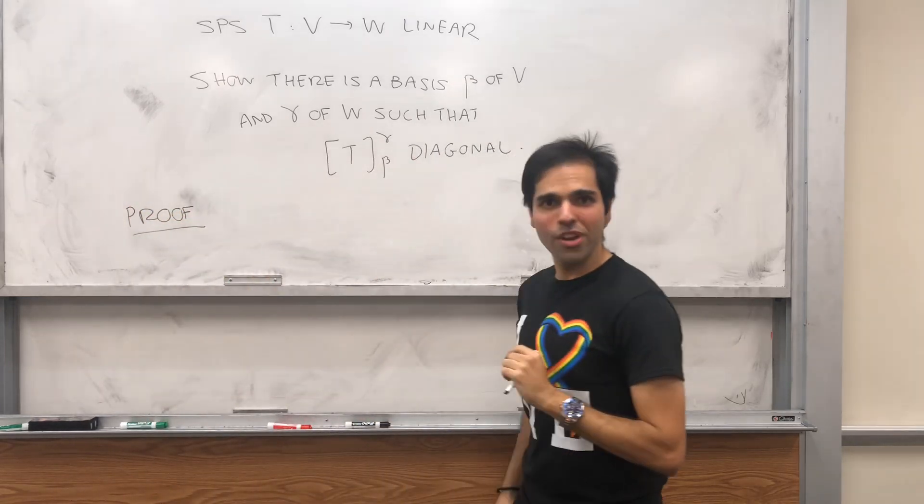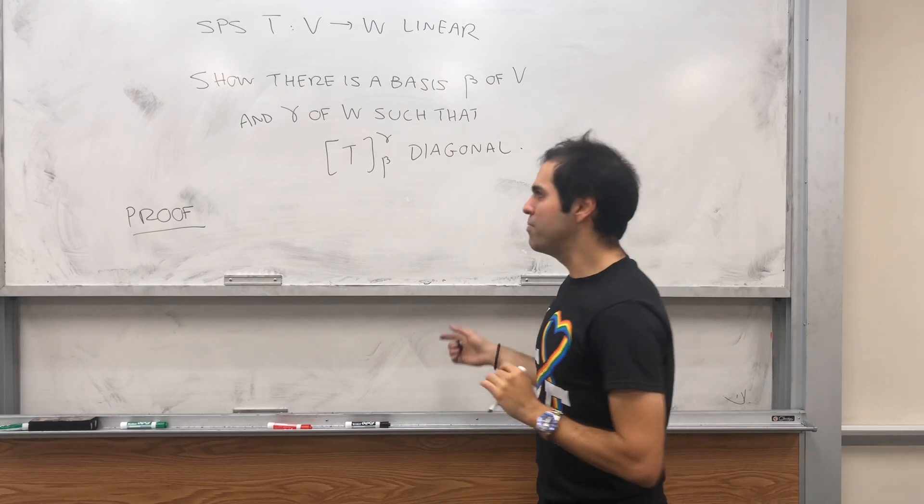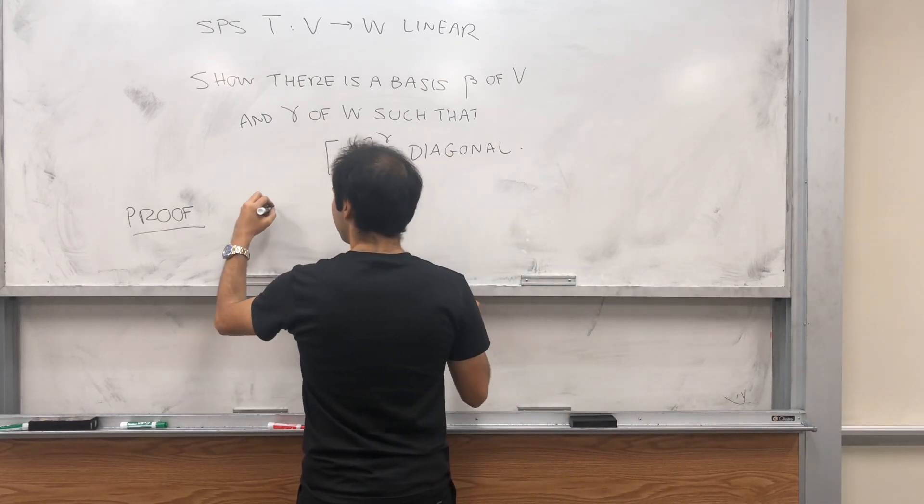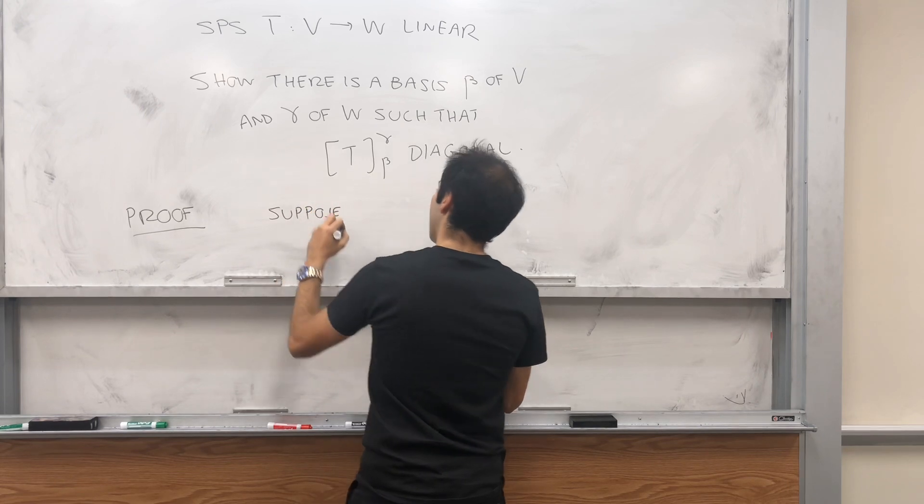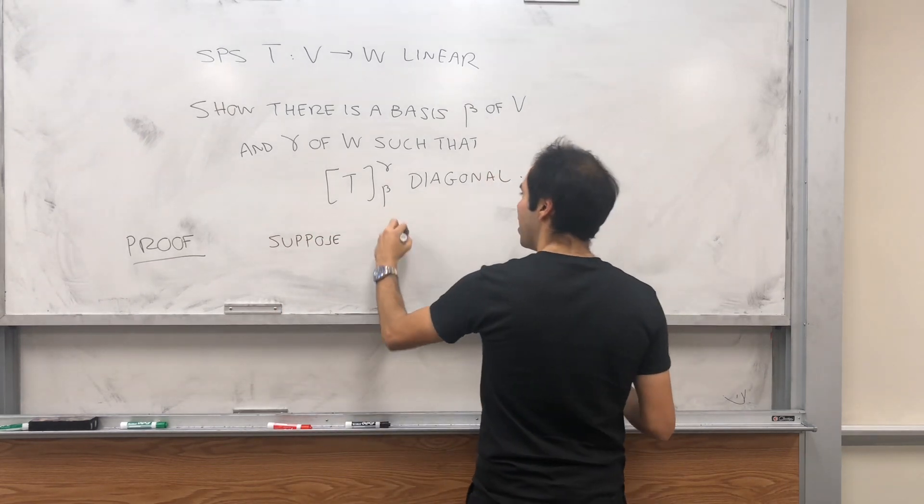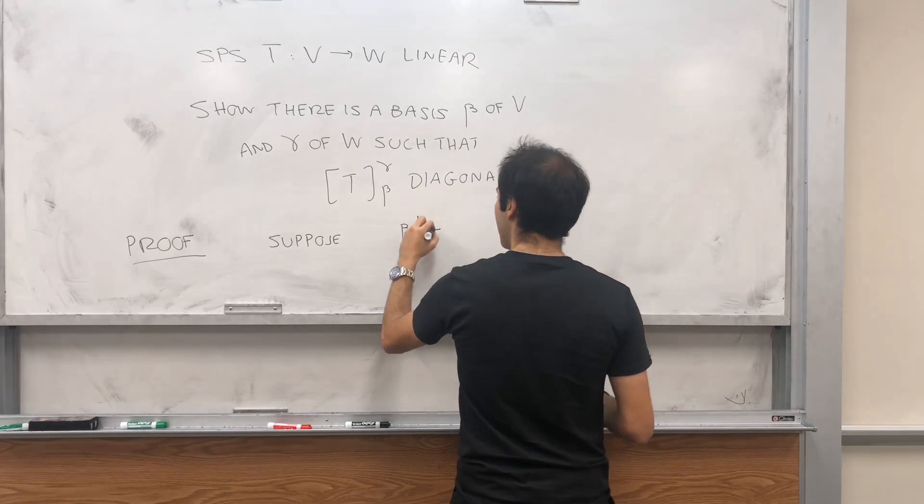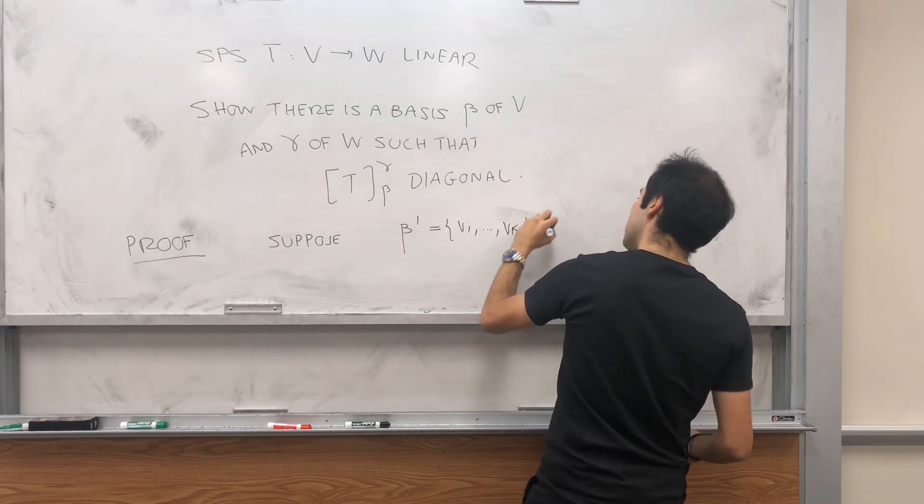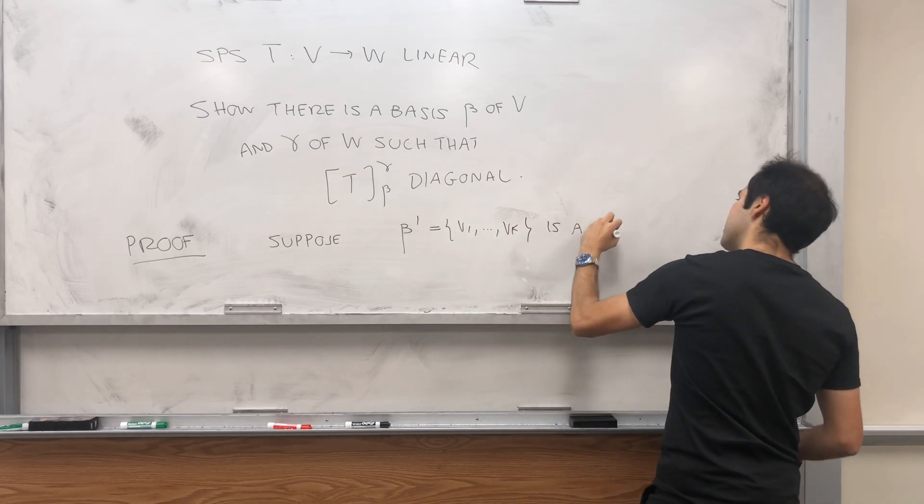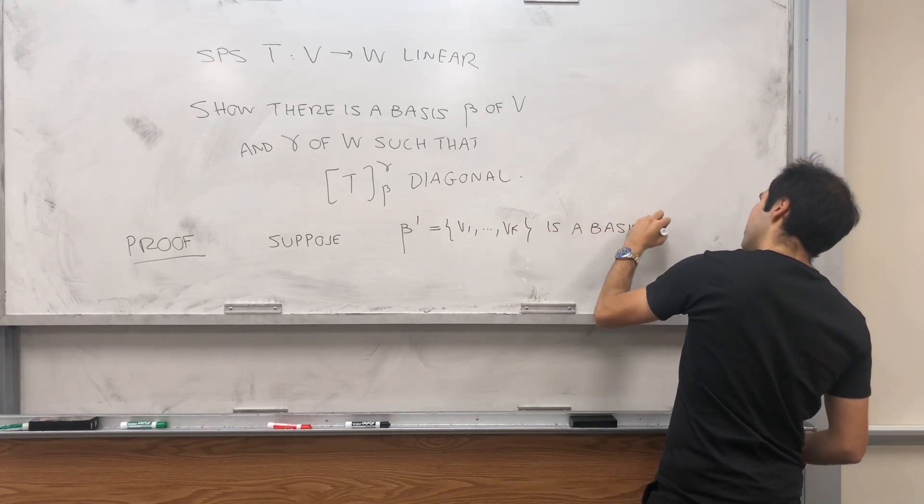Turns out, in a very weird way, you start with the basis for the null space. So suppose, let's call it beta prime because it's not quite beta. Beta prime, let's say, which is v1 up to vk, is a basis of the null space.